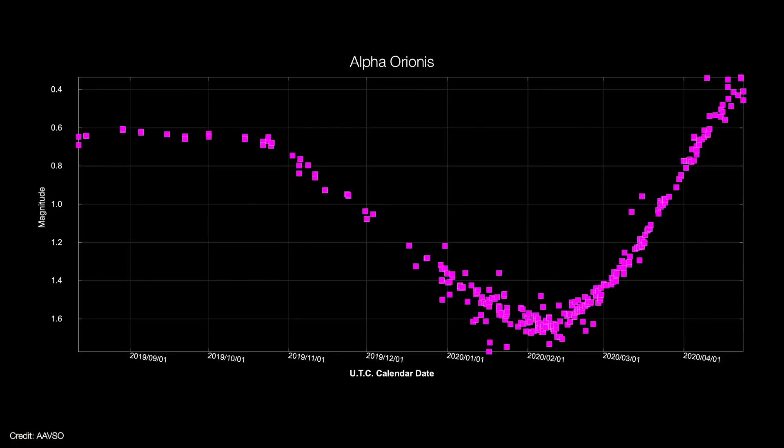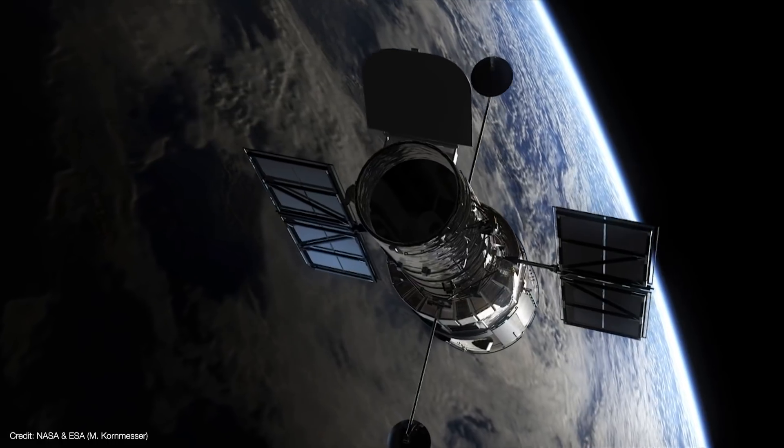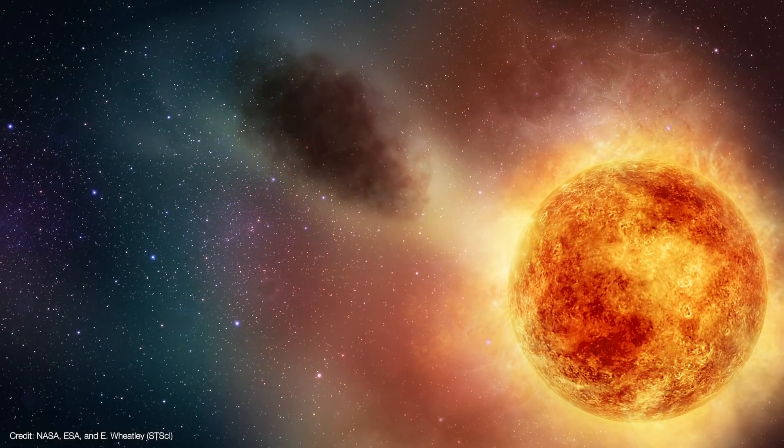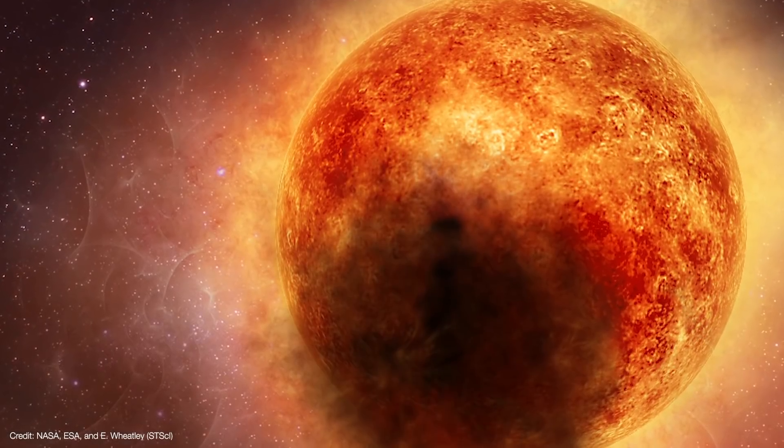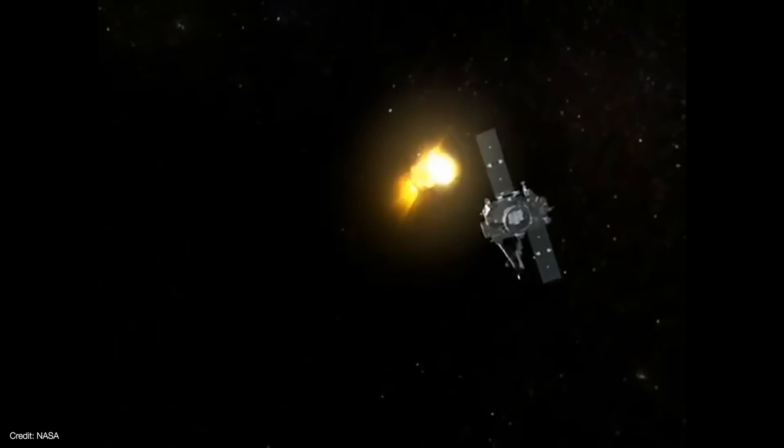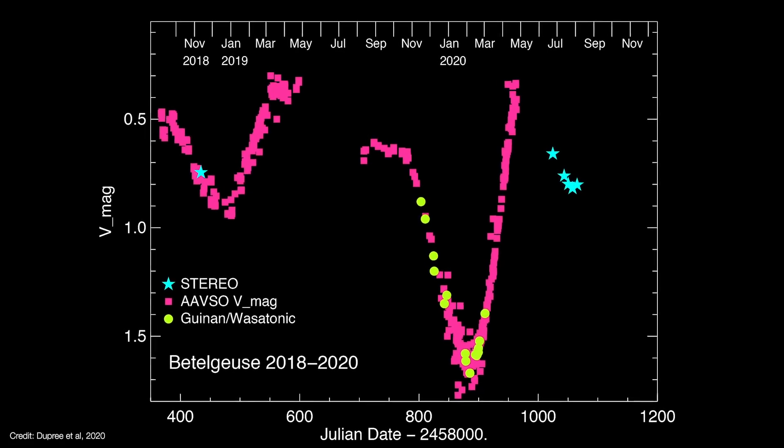Then Betelgeuse recovered, returning to its normal brightness before disappearing from the night sky in late April. Now, new results from the Hubble Space Telescope suggest that Betelgeuse may have ejected a massive cloud of dust that obscured its view. Meanwhile, NASA's Stereo spacecraft imaged Betelgeuse over the summer of 2020 when it wasn't observable from Earth. It turns out, Betelgeuse was dimming again.